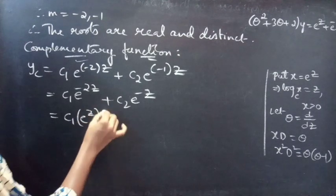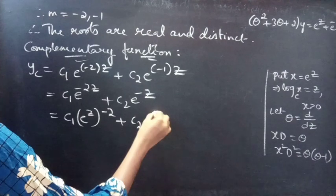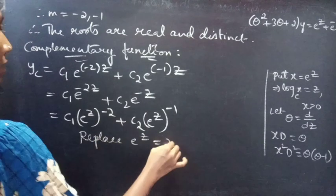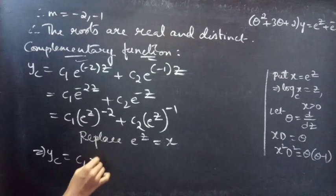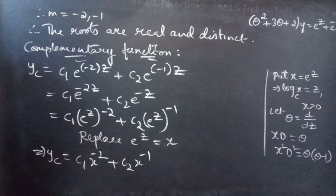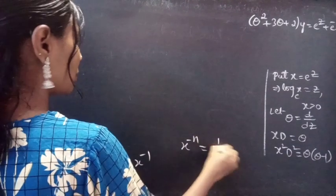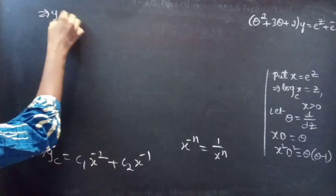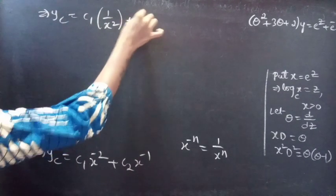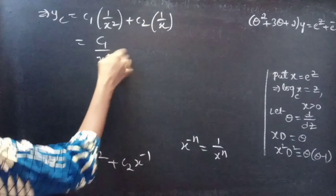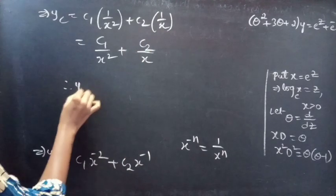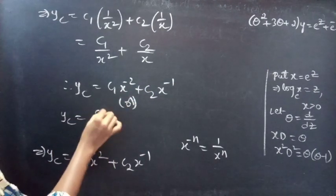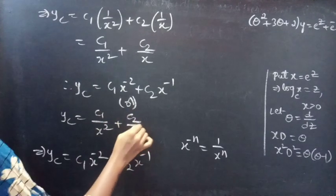We have yc in terms of z, so we write e^(−2z) as (e^z)^(−2) and e^(−z) as (e^z)^(−1). Replacing e^z by x gives yc = c1·x^(−2) + c2·x^(−1). Since x^(−n) = 1/x^n, we can write x^(−2) = 1/x² and x^(−1) = 1/x. Therefore, yc = c1/x² + c2/x.